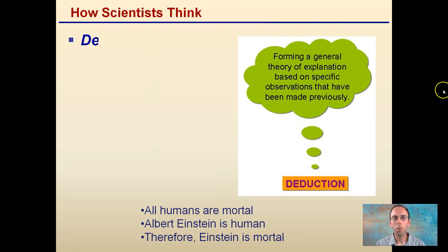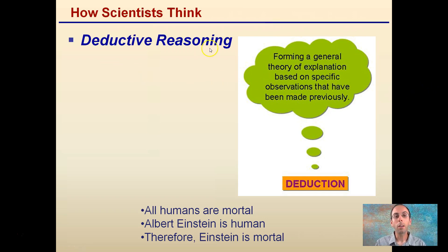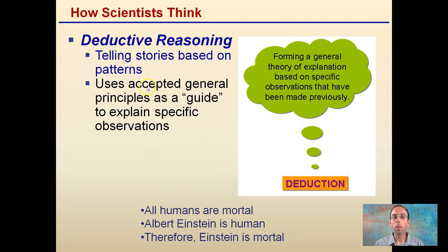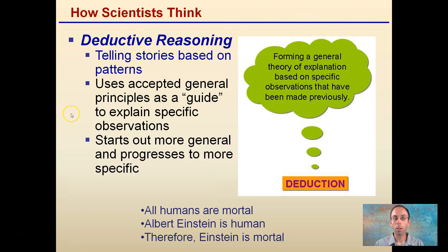How Scientists Think — there are two main ways. We have deductive reasoning, which involves telling stories based on patterns. This uses accepted general principles as a guide to explain specific observations. It starts out more general and progresses to become more specific.